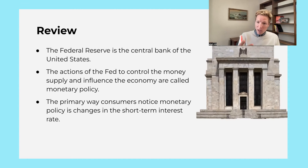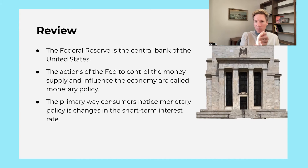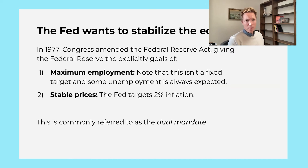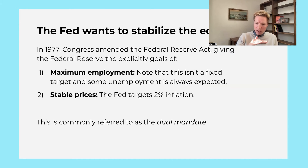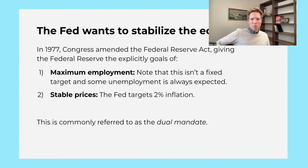Now we're going to move to monetary policy. We just want to review: there's the central bank in the US, the Federal Reserve — they're controlling the money supply, and this is monetary policy. The primary way that consumers notice monetary policy is the change in the short-term interest rate. The goal of the Fed with monetary policy is they're trying to get maximum employment — not 100% employment, because there's always going to be some churn as people move from job to job — and they want stable prices. Their target is 2% inflation, and this is referred to as the dual mandate.